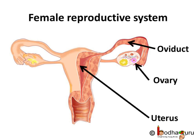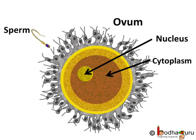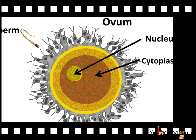In females, generally a single matured egg is released into the oviduct or the fallopian tube by one of the ovaries every month. Like sperm, the egg or the ovum is also a single cell, but it is much larger than a sperm. The human ovum measures approximately 0.12 mm in diameter.